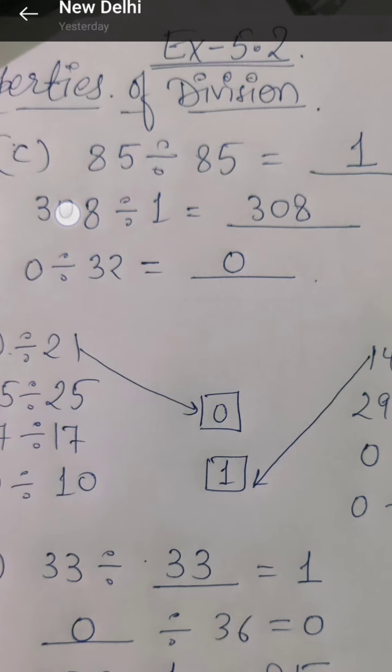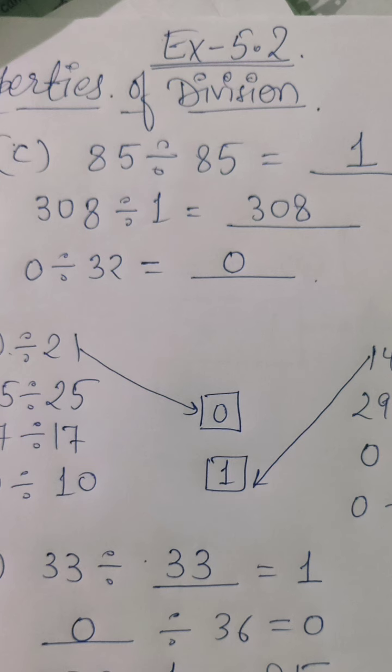Similarly, if we divide the number from 1. If we divide the number from 1, then we get that number only. So, if it was 308, then my answer will be 308.